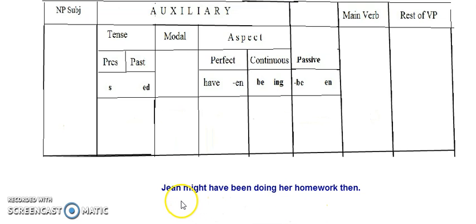We start with Jean. Jean here is a noun. Do we have anything else in the noun phrase other than Jean? No, because the verb starts from might. So we'll take Jean and write it in the noun phrase space over here, the subject.